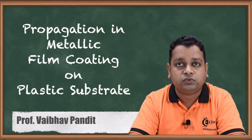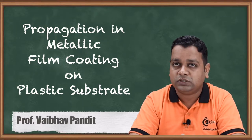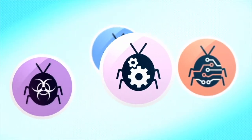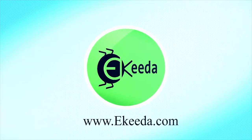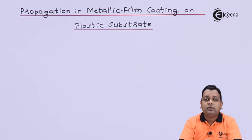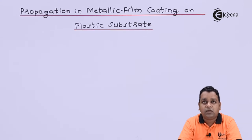Lastly, we need to understand the specific applications where metallic film coated onto plastic substrates is used to attenuate radiation. Our topic here is microwave propagation into the metallic film coated onto the plastic substrate. There are certain engineering applications — for example, the windshields of aeroplanes or automobiles — where radiation is to be attenuated at an optimum level.